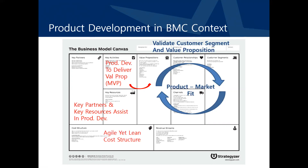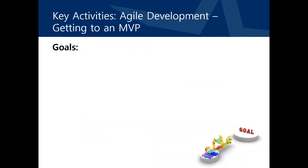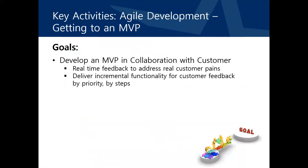We'll explore how an agile process can contribute to a lean cost structure. The initial goal in product development is to develop an MVP capable of selling for revenue. To do this, one must develop the MVP in collaboration with the customer, giving real-time feedback as you develop to ensure it truly addresses their needs. This often requires delivery of functionality in an incremental fashion, driven by the features prioritized by the customer.